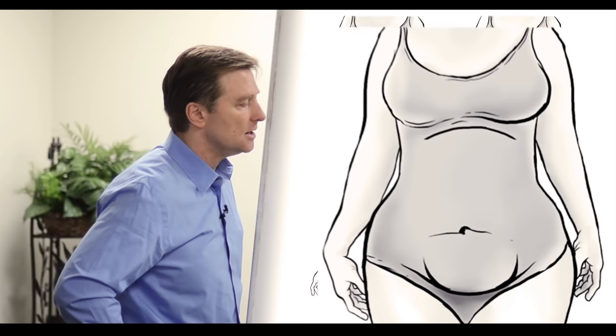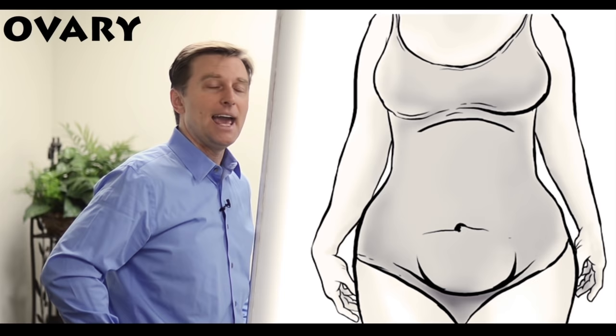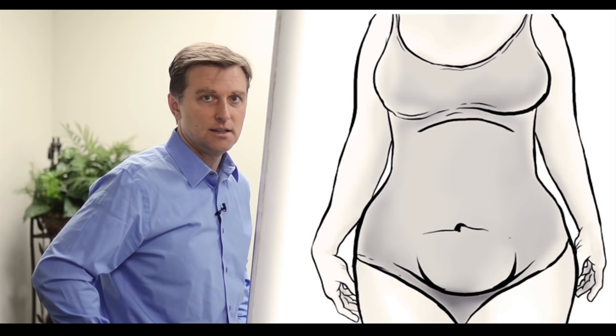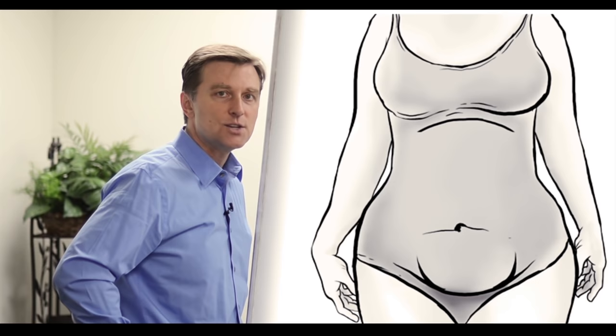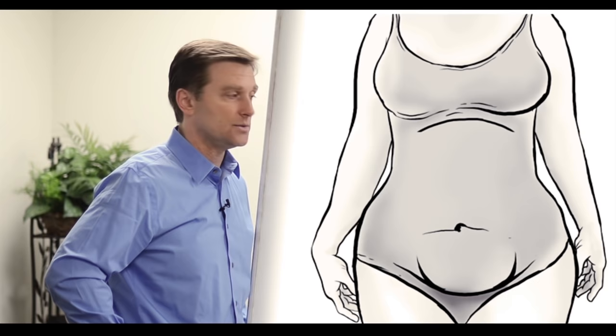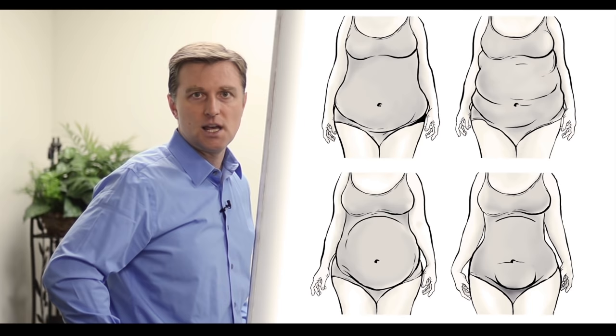The next body type would be number four, the ovary type. The ovary type holds weight more in the hips and a little pooch below the belly button. That type is more of an estrogen dominant case. And those cases need to support estrogen balance. What would that be? Well, cruciferous vegetables are the key food to help balance estrogen. And also in their food, they want to make sure that they're not consuming just commercial food that has hormones in it. They want hormone-free type foods, especially dairy and meats.